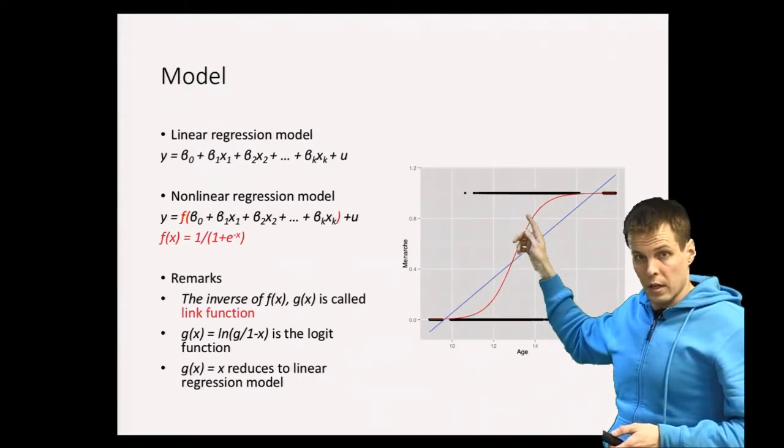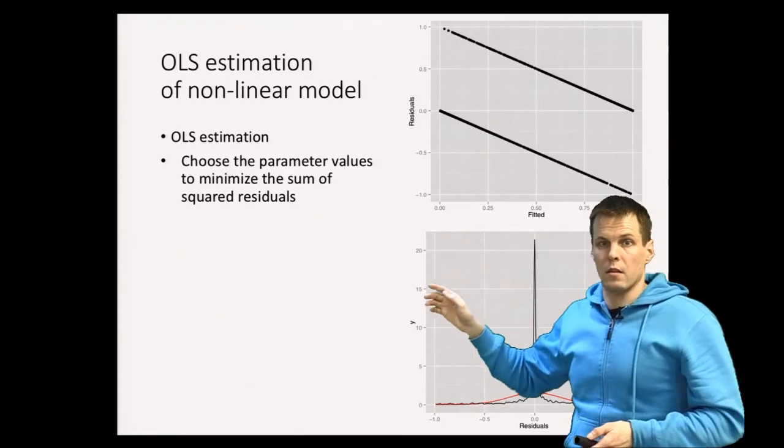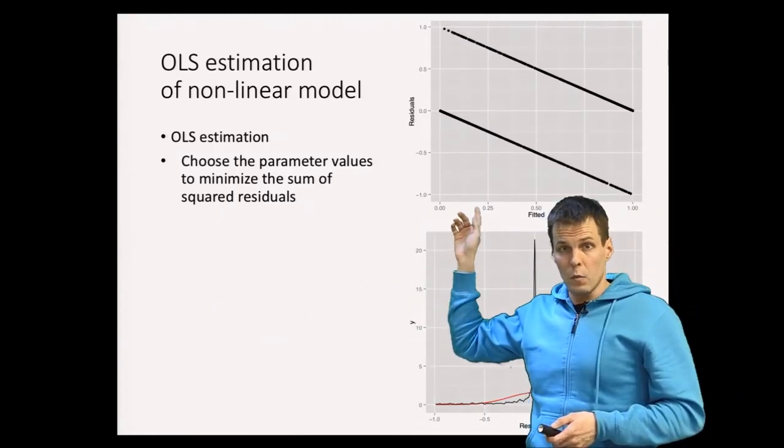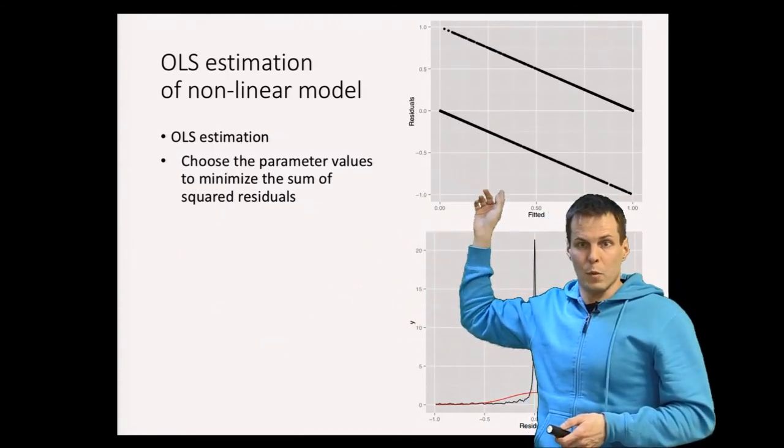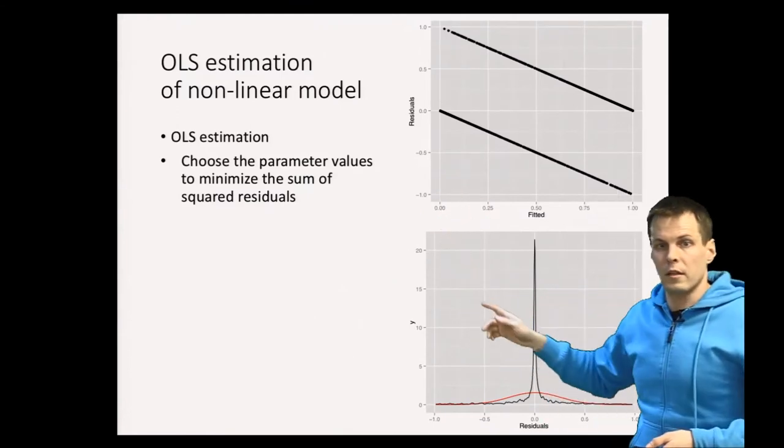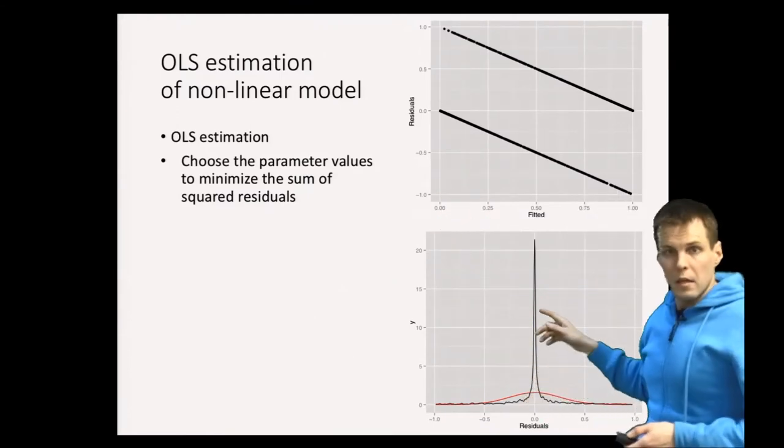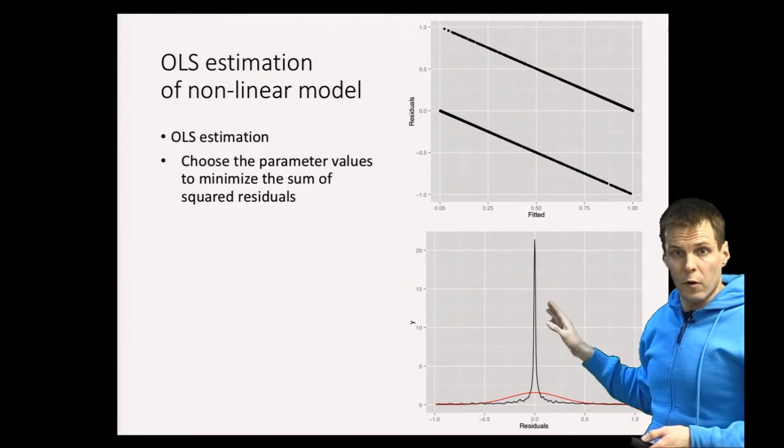We can calculate the residuals, then we can plot residual versus fitted, which is one of the standard diagnostic plots, and then we can check the normality of the residuals. We have two violations of regression assumptions.